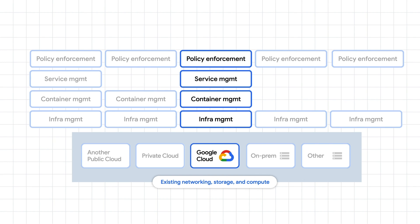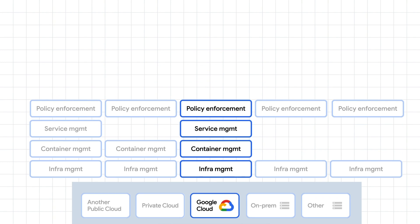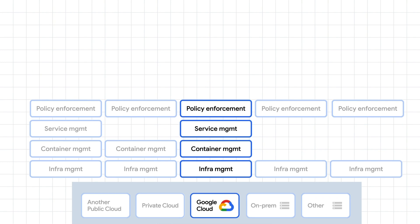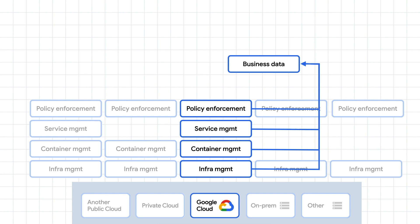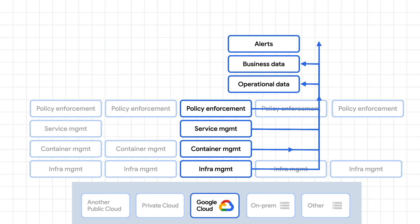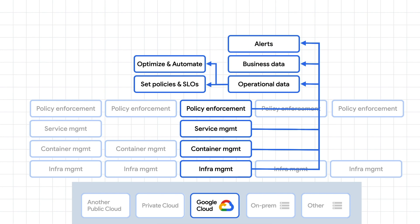To manage these across platforms, you need monitoring and logging systems. You need to integrate that data into meaningful categories like business data, operational data, and alerts. Digging further, you might use operational data and alerts to inform optimizations, automations, and to set policies or SLOs.